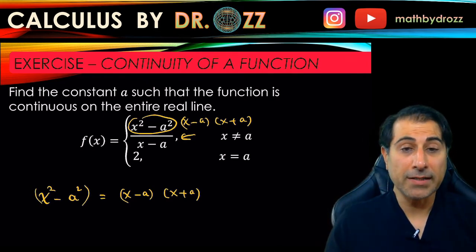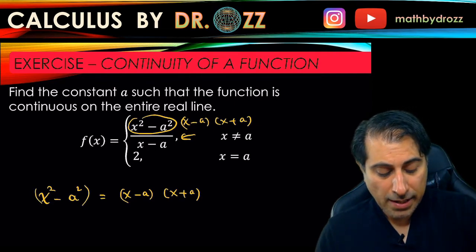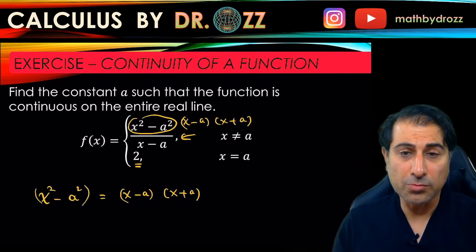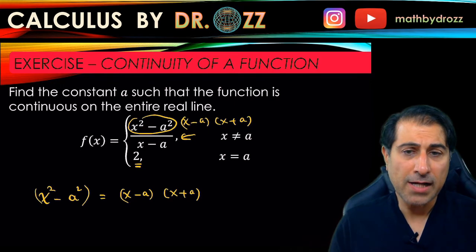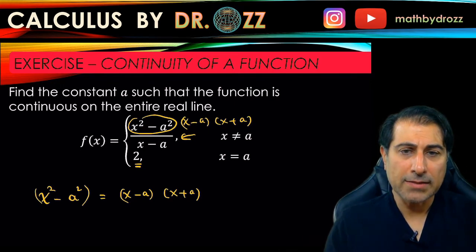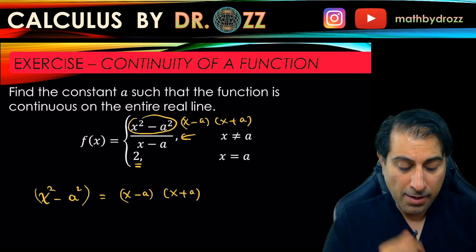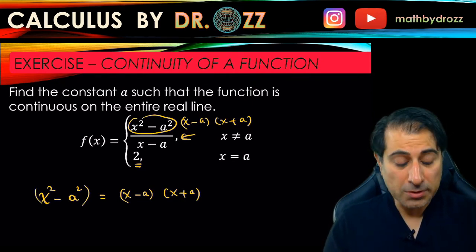However, f is defined at x equals a as being equal to 2. So now we're going to look at the limit of this function at the junction point because, when x is not equal to a,